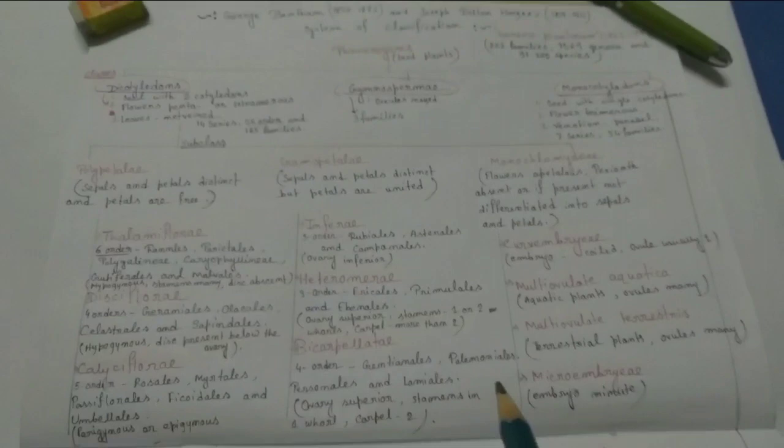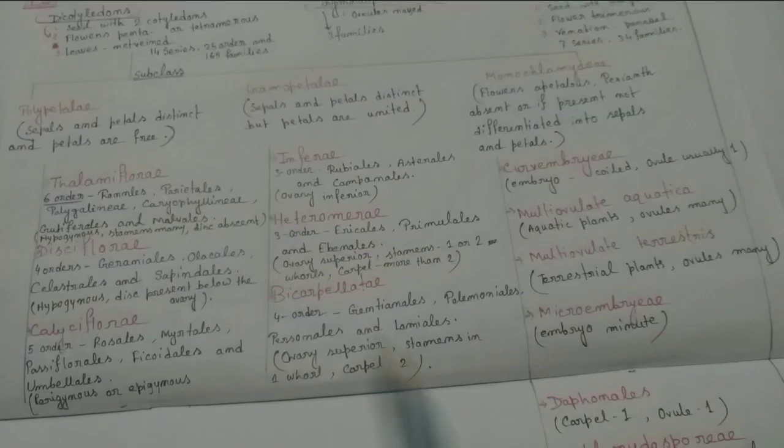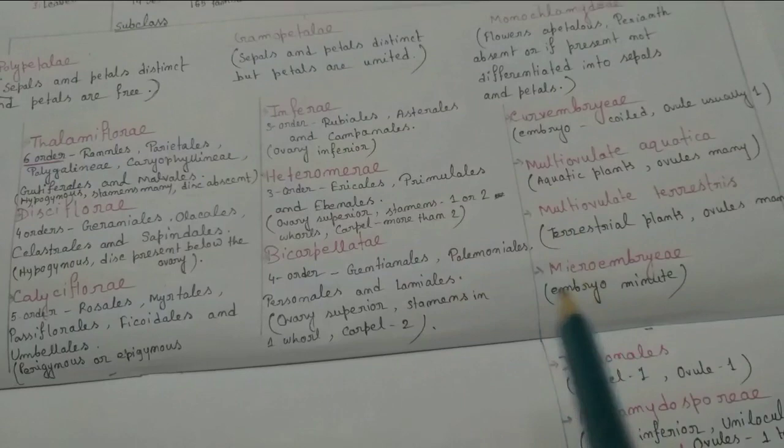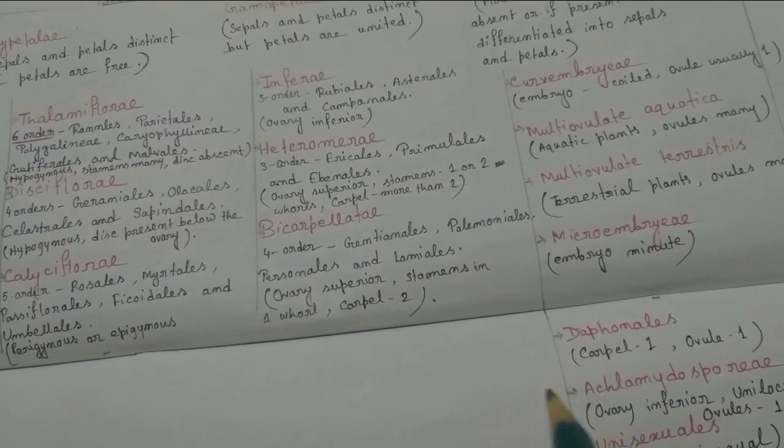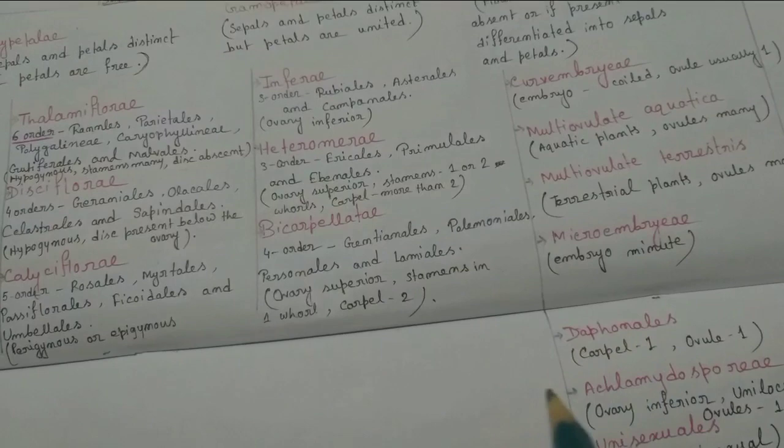It is the overall classification of Bentham and Hooker. Though the system does not incorporate any phylogenetic relationship and is more than 100 years old, it still enjoys a reputation of being a very sound system of classification.